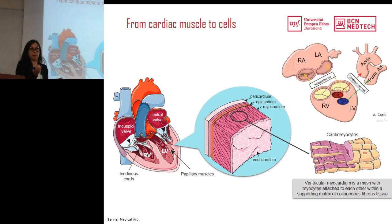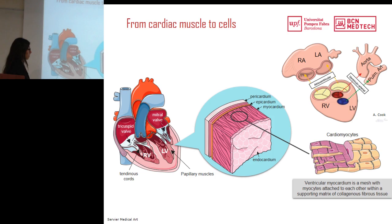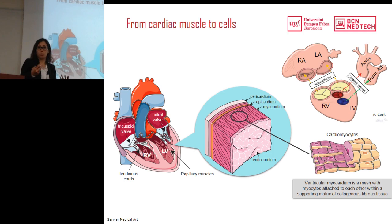If we look at a longitudinal cut of the heart, you can see the structure is really complex — you can find the papillary muscles with tendons connecting the valves, including the mitral valve and the tricuspid valve. Looking deeper at the cardiac wall, it is mainly formed by three different layers: the endocardium, which is the inner layer; the myocardium, which is the muscular layer generating the force needed for the heart to contract and pump blood; and the epicardium, which is the outer layer. Finally, all the heart is surrounded by the pericardium.